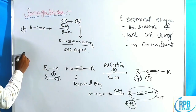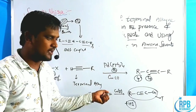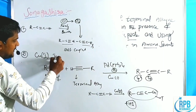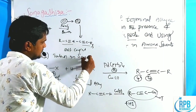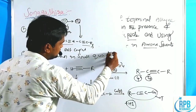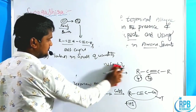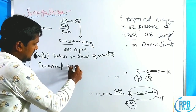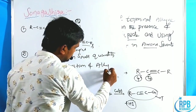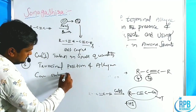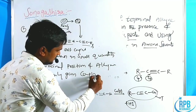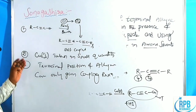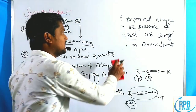The second limitation: in Sonogashira coupling, copper iodide must be taken in small quantity. The third limitation: only the terminal position of the alkyne can undergo the coupling reaction. These are the main limitations of the Sonogashira cross-coupling reaction.